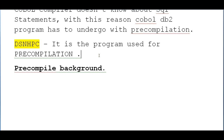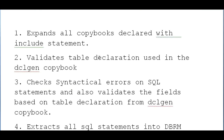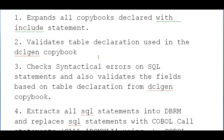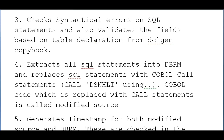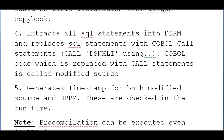In pre-compilation, the first thing it does is expand all copy books declared with INCLUDE statements. Then it validates table declarations used in DCLGEN copy books. Next it checks for syntactical errors on SQL statements and validates the fields based on table declarations from the DCLGEN copy book. At the same time it extracts all SQL statements into the DBRM and replaces them with COBOL call statements so the COBOL compiler can understand the code.